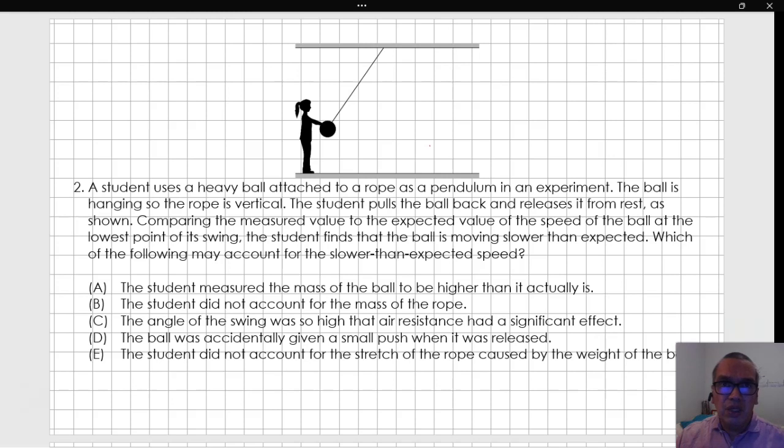If you ignore any change in mechanical energy caused by the environment, you should have that the initial gravitational potential energy is equal to the final kinetic energy at the bottom of the swing.